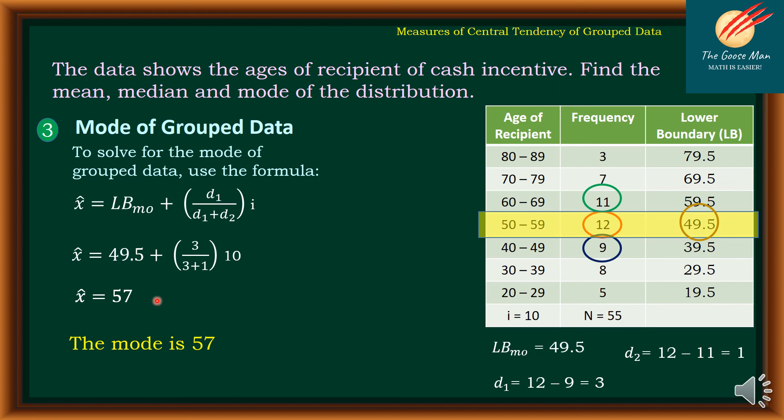So the mode is equal to 57. That ends our discussion on the measure of central tendency of grouped data. This is Teacher Ony de Guzman — do not forget to subscribe to my channel so that you will be notified about my new videos. Thank you.